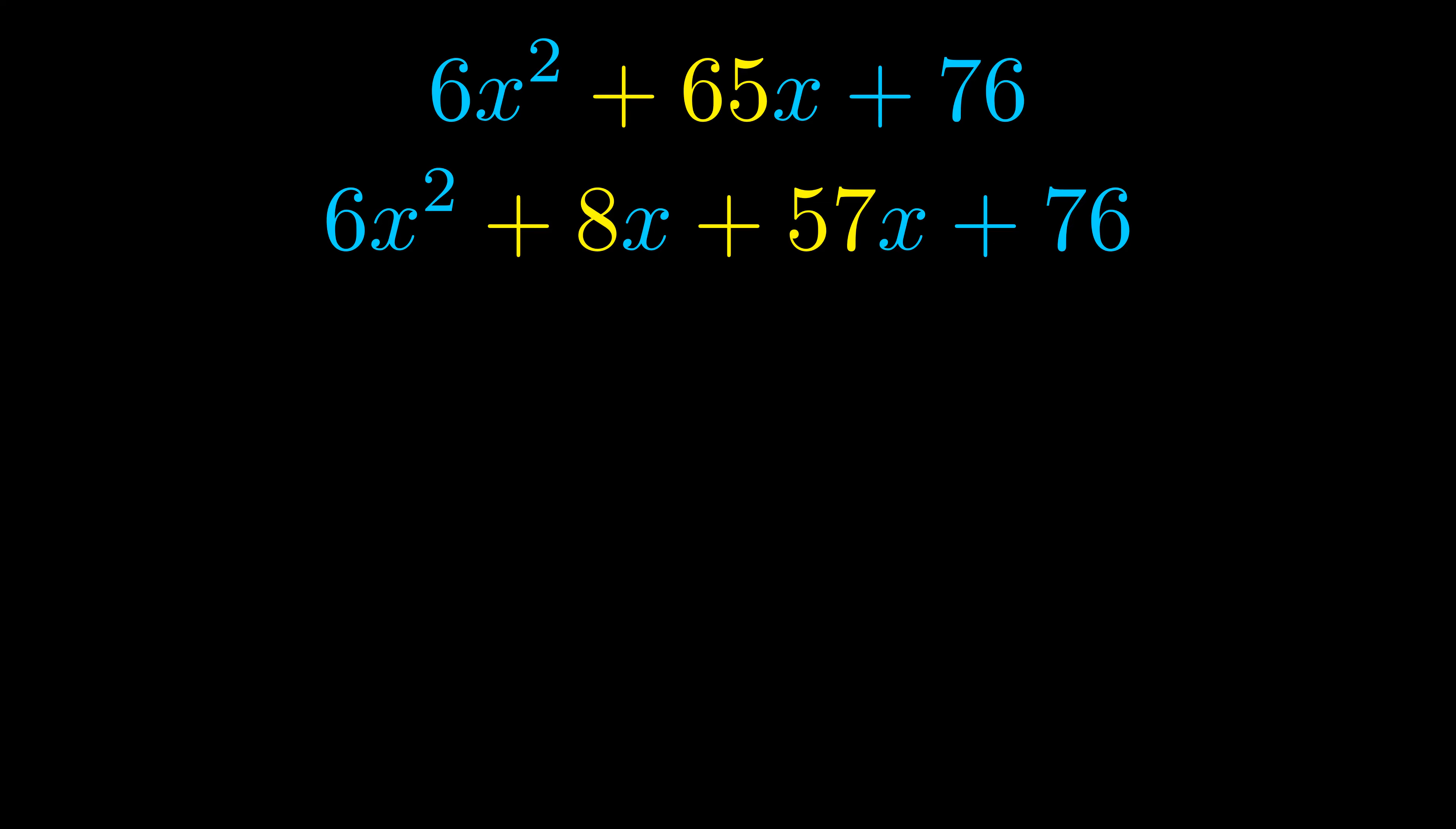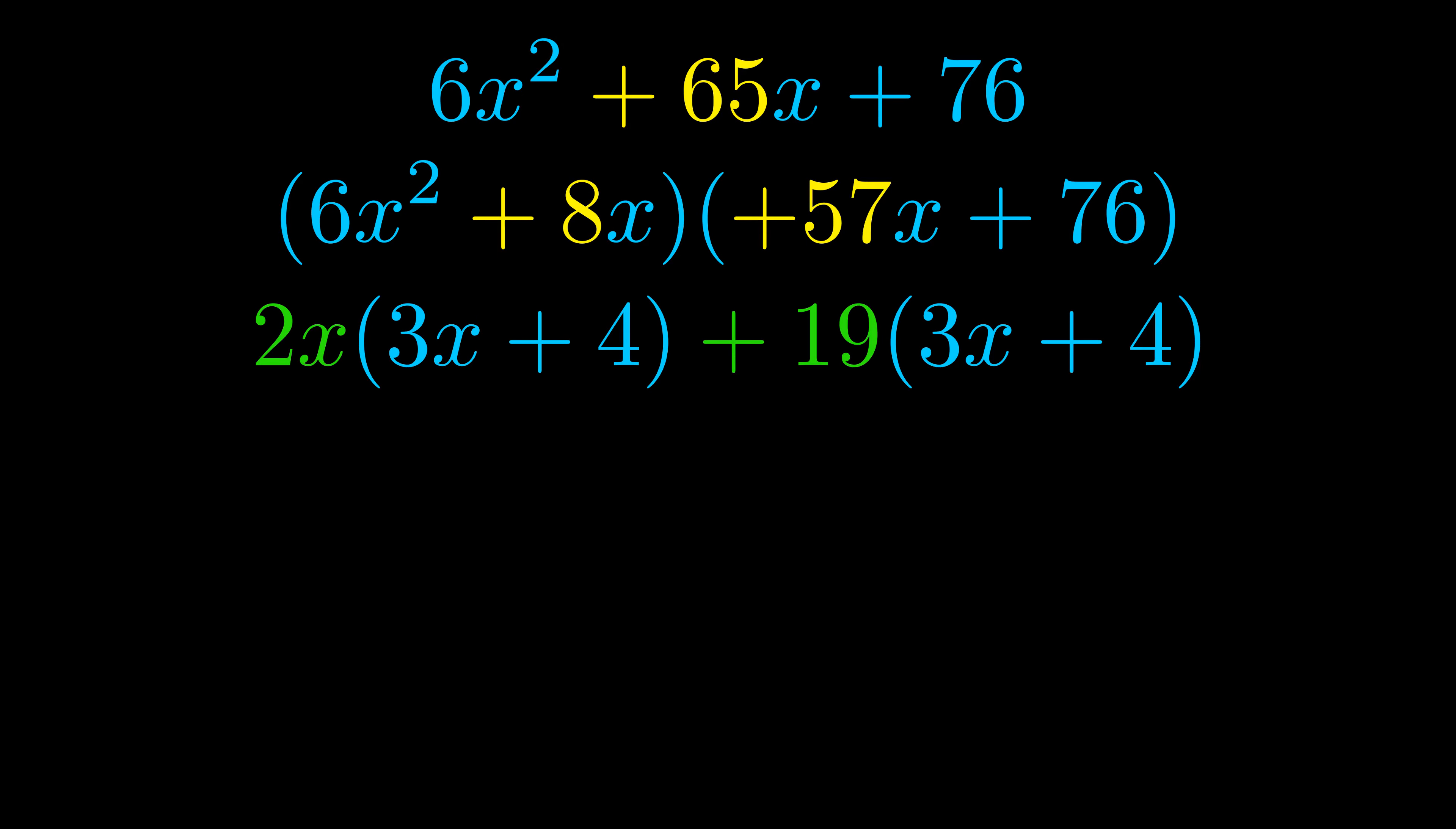Once we've done this, we put parentheses around the first term and the last term so that we can take the greatest common factor out of both terms. We can see the greatest common factor is now outside in green.